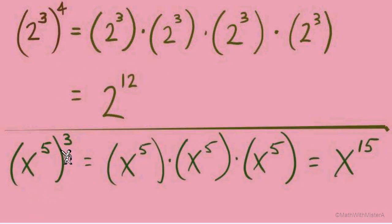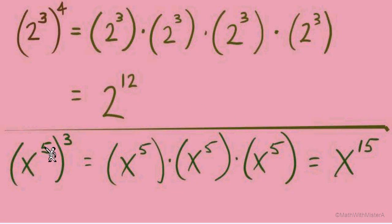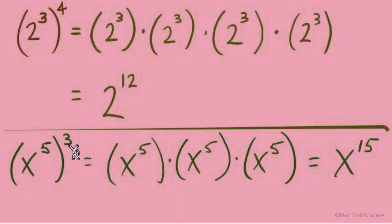Do we have the same pattern at work in both examples? It looks like we multiply the exponents. It's useful for us to see why: the exponent of 3 tells us we have x to the 5th once, twice, 3 times — so we have 5 three times, giving us 5 times 3 = 15 total x's. I don't want you to always focus on expanded form; if you've got it and know to multiply the exponent in, that's great. These patterns help us work more efficiently.